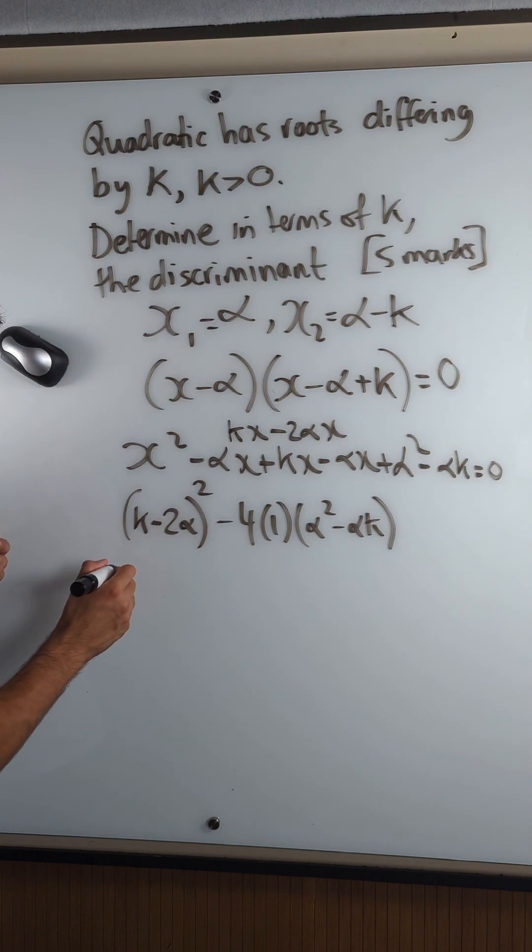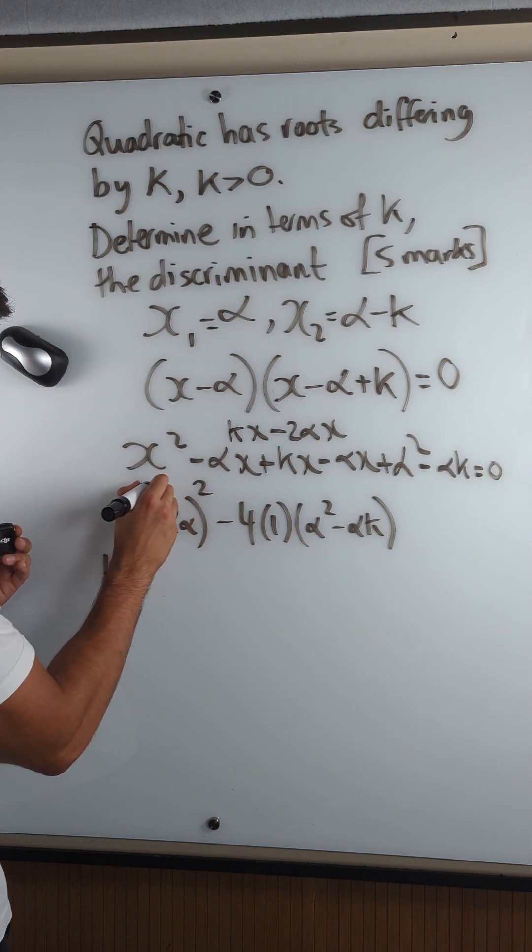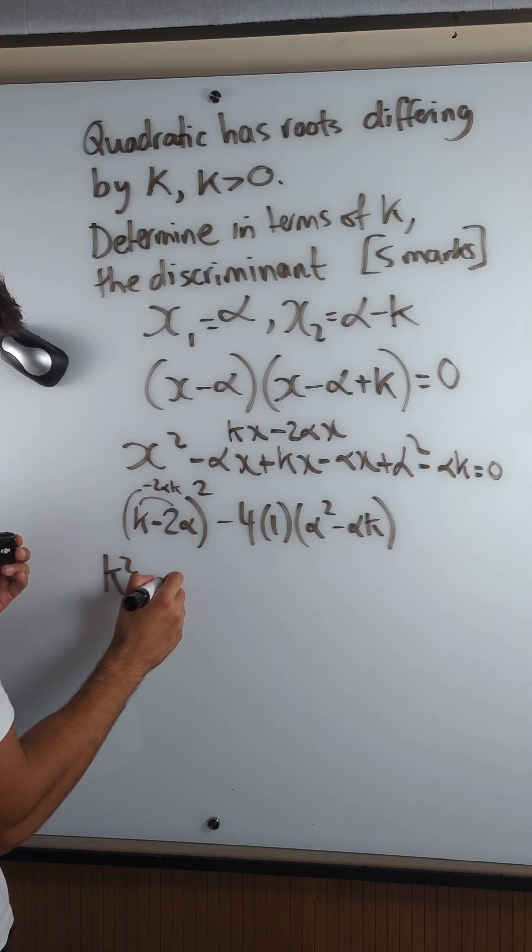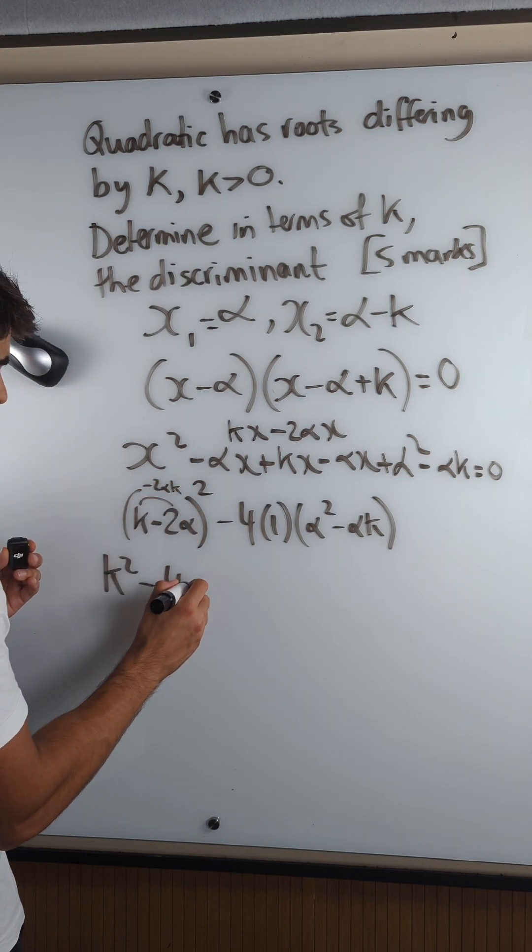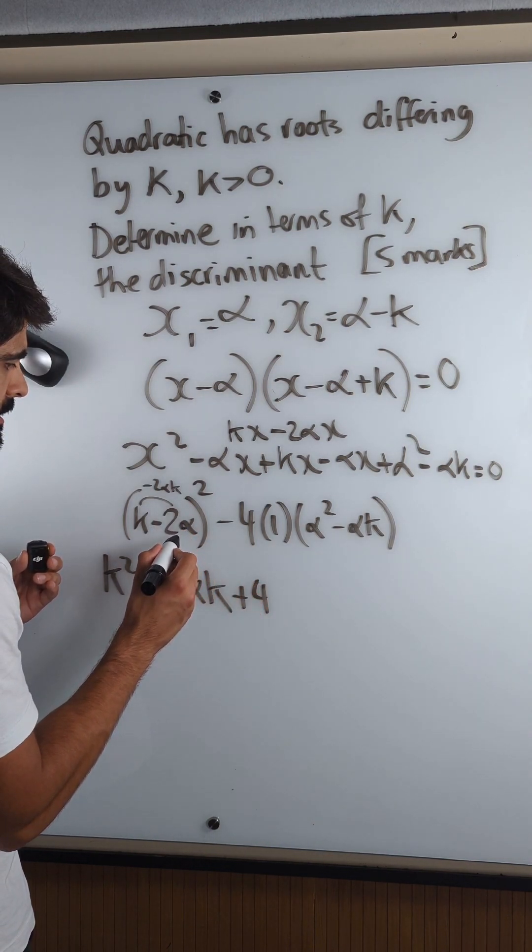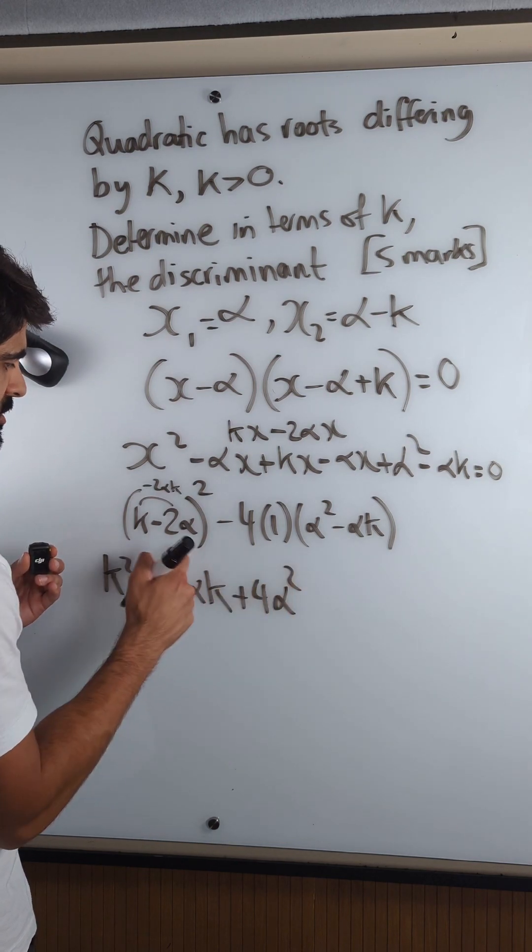Expanding this, I get k squared. Multiply these together would be minus 2 alpha k, wait, minus 4 alpha k plus 4 alpha squared. You square that.